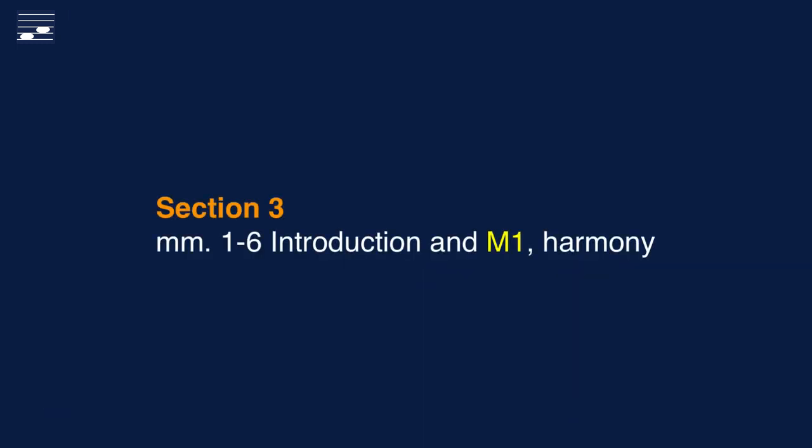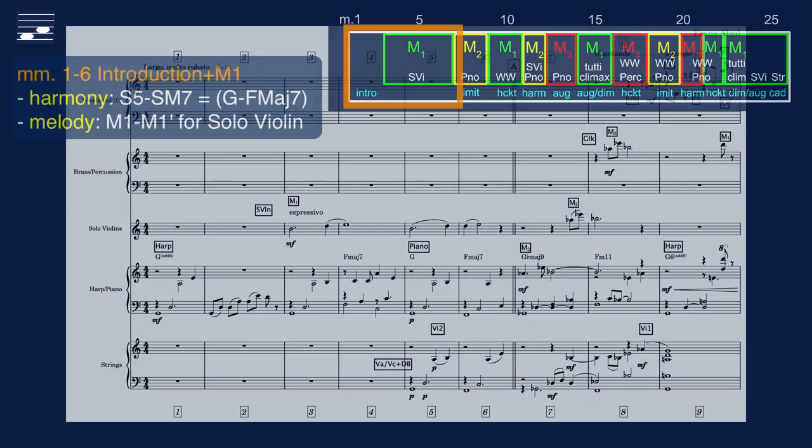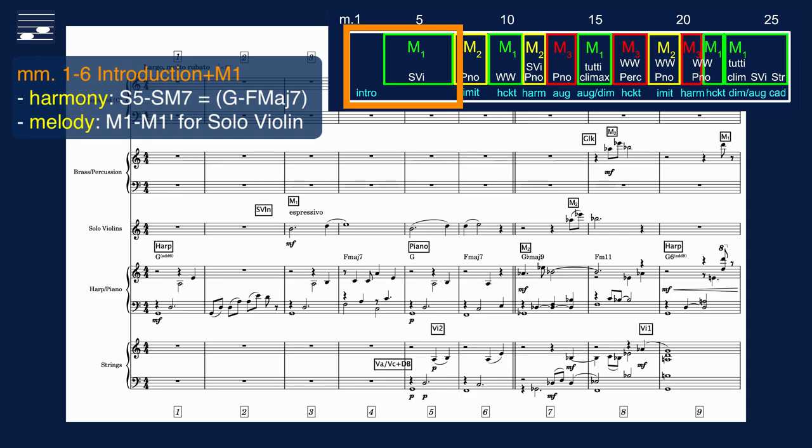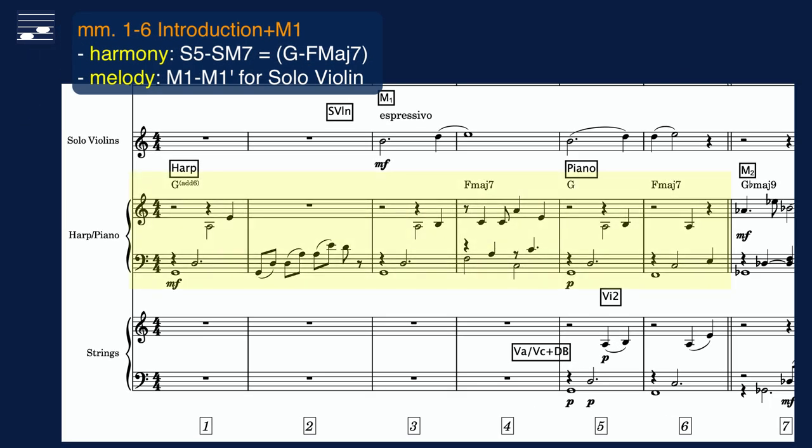The opening measures are an intro for harp and the first statement of M1 for solo violin. The harmony alternates between the pure G major triad S5 and the F major 7 chord. Already this chord pair has floating quality and applies a mixolydian mode with the lowered 7th degree, the pitch F natural.